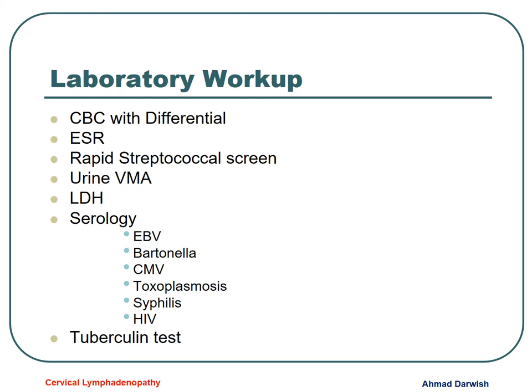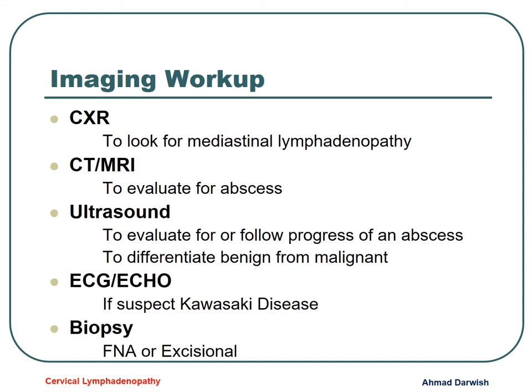For investigations, the most important are CBC and blood film showing differential and leukocyte count. ESR is mandatory because if more than 100, it may denote malignancy, TB, or collagen disease. Rapid antigen detection test for strep, 24-hour urine for metabolites like vanillylmandelic acid for neuroblastoma, LDH could be elevated. Serology for viral and bacterial infections and parasites like EBV, Bartonella, CMV, toxoplasma, and HIV. Tuberculin test is significant. Chest X-ray to check for mediastinal masses or lung infection. CT, MRI, ultrasound, and in Kawasaki, ECG and ECHO. Biopsy is mandatory in certain cases.